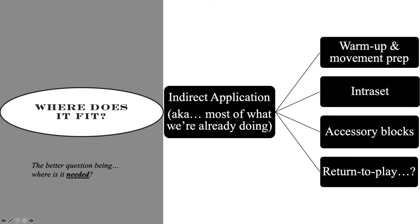Bear in mind that you're getting an indirect application on almost all of what you're already doing. Sprinting is a quintessential fascial training movement — you're getting an enormous amount of fascial training just by sprinting, no fancy bands or unstable surfaces needed. Equally, a heavy three-rep back squat gives a lot of fascial work. Keep that in mind. A lot of my warm-up and movement prep is really built around the spiral chains and identifying the independent weaknesses of the slings.